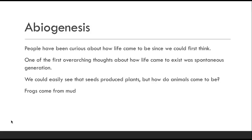One of the first overarching thoughts of that time was that animals would come from certain characteristics in the environment. The big one is frogs would come from mud, or maggots would come from steak. So they would assume that if there's a mud puddle, you walk away and a few days later come back, there'd be frogs — spontaneously generated from the mud. Or if your steak went bad and you set it out, eventually maggots would appear, so maggots must come from steak.